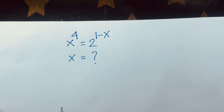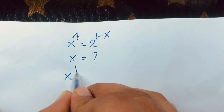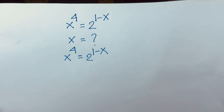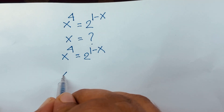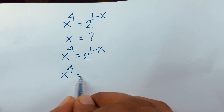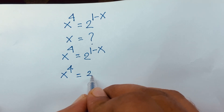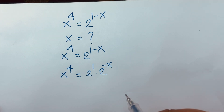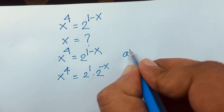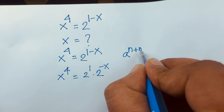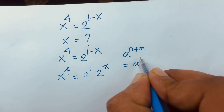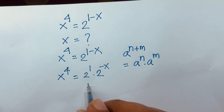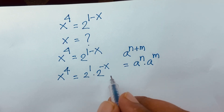Our equation is x to the power 4 is equal to 2 to the power 1 minus x. Then x^4 = 2^(1-x), and I can say it will be 2 to the power 1 times 2 to the power minus x. According to exponential rules, we know that a to the power n plus m is equal to a to the power n times a to the power m. According to these rules, it will be 2 to the power 1 times 2 to the power minus x.